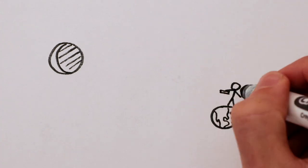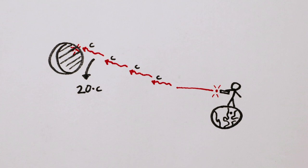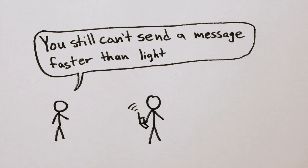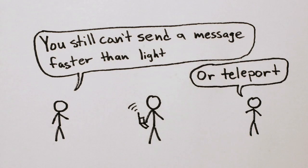The laser pointer on the moon is basically the same. Each photon travels to the moon at the speed of light, but the image of a dot that they form on the surface moves 20 times faster. No physical laws are broken because nothing physical is actually traveling faster than light. It's just an image.